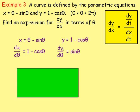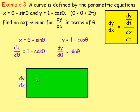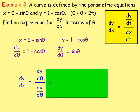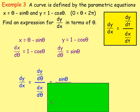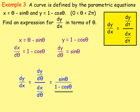So we've got dx/d-theta and dy/d-theta. To get dy/dx, that would be dy/d-theta over dx/d-theta — remember the parameter is theta, not t. dy/d-theta is sine theta, and dx/d-theta is 1 minus cos theta. Substituting those in — you can't simplify further — so dy/dx equals sine theta over 1 minus cos theta. That is your answer.